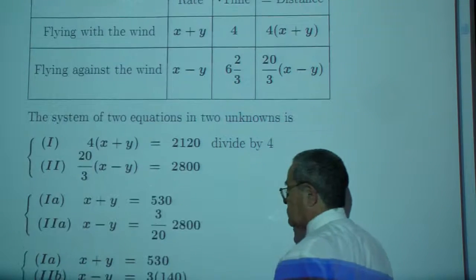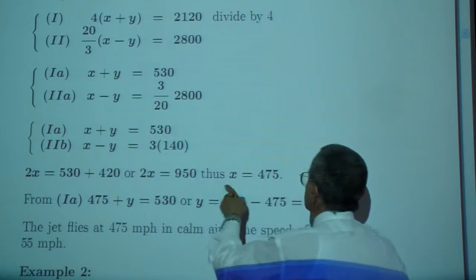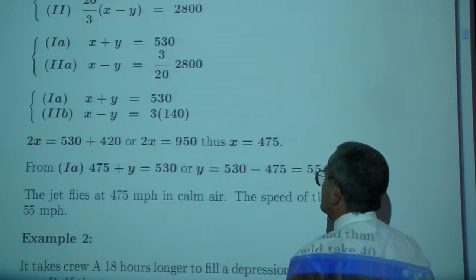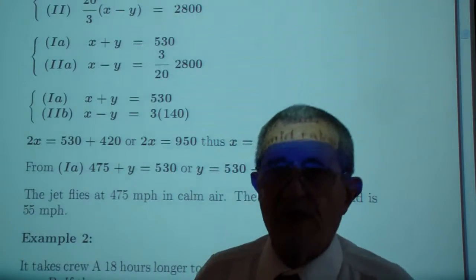When you add the two, the y drops out. So by elimination, we come up with x, which is 475, and y, which is equal to 55. That was example 1.